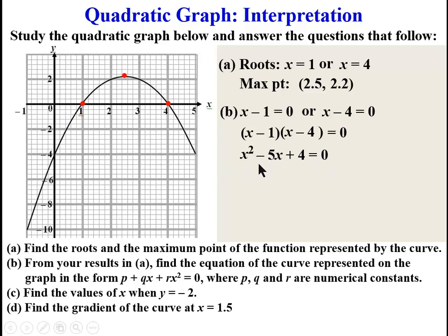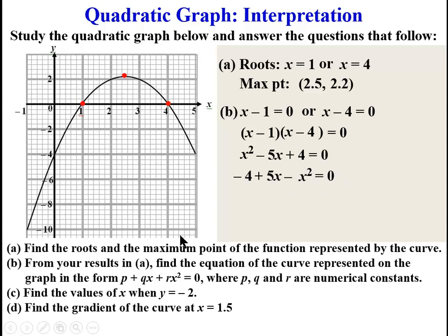So doing that, and arranging it to match the required form with the constant starting first: multiplying positive 4 by negative 1 gives negative 4; multiplying negative 5X by negative 1 gives plus 5X; then minus X squared equals 0. That gives the equation of the curve represented by the graph.